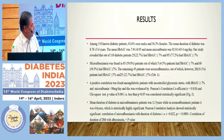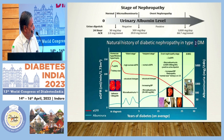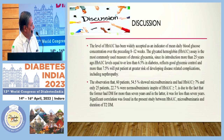Among the 110 diabetic patients, 63 were male and 36 were female. The mean duration of diabetes was 8.7 years and the mean HbA1c was 7.9. Microalbuminuria was 92.8 in our study and was found in 65% of patients with glycated hemoglobin less than 7%, consistent with the known natural history of diabetic nephropathy in type 2 diabetes.